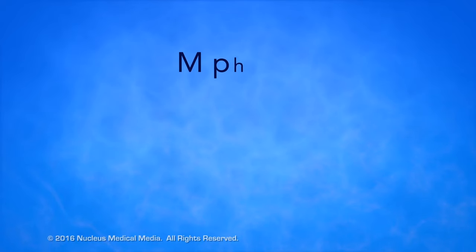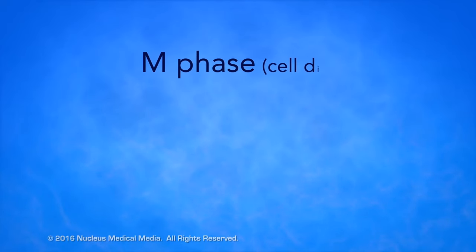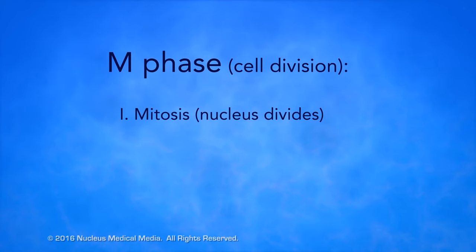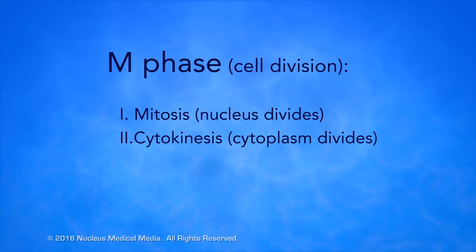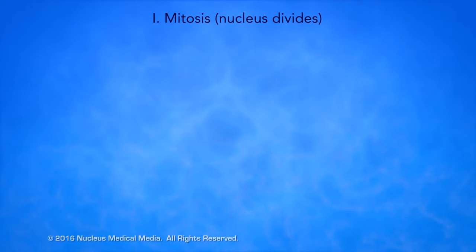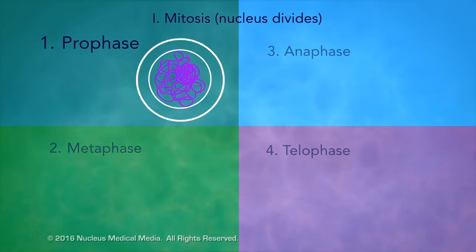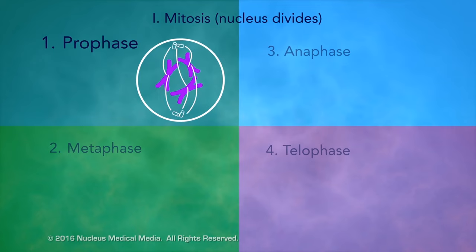Here are the key points to remember. The M phase is the fourth and final phase of the cell cycle. During the M phase, cell division occurs through two processes: mitosis, when the nucleus divides, and cytokinesis, when the cytoplasm divides. Mitosis has four phases. During prophase, chromatin condenses into chromosomes, spindle fibers form, and the nucleolus and nuclear membrane disappear.